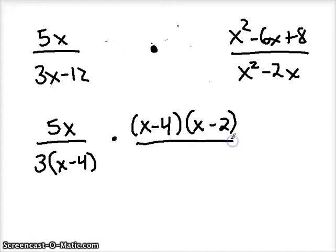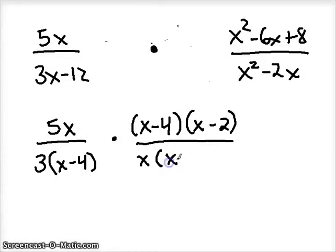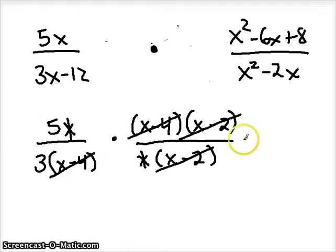You can FOIL that to check to make sure you did it correctly. On the bottom, we just have common factors here. I can factor out an x and have an x minus 2 left over. Cancel the common factors here on top and bottom. x minus 2 divided by x minus 2 is 1, so we can get rid of that. We can get rid of the x minus 4, and we can also get rid of these x's right here. So that just leaves us with 5 over 3. That's pretty nice.